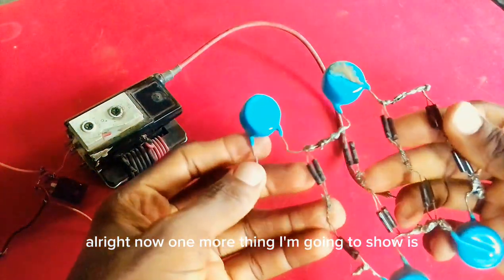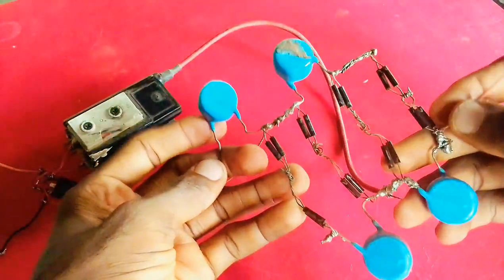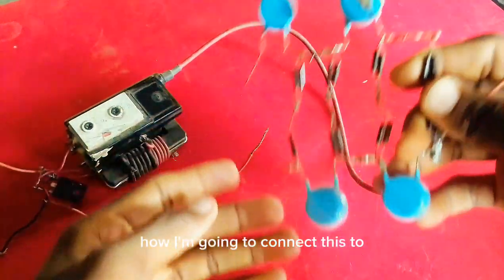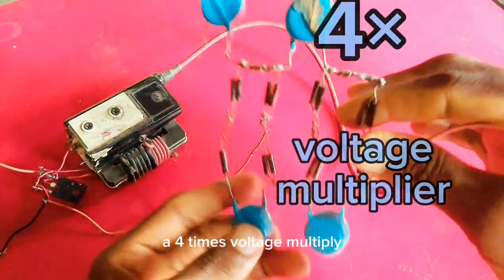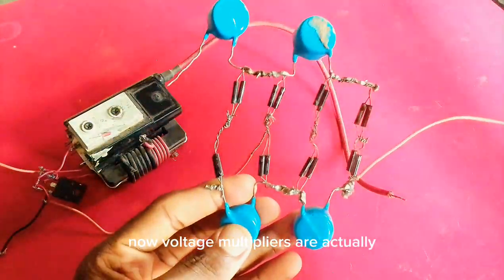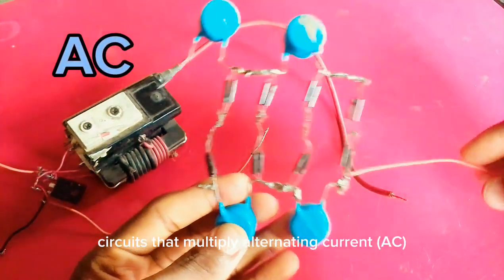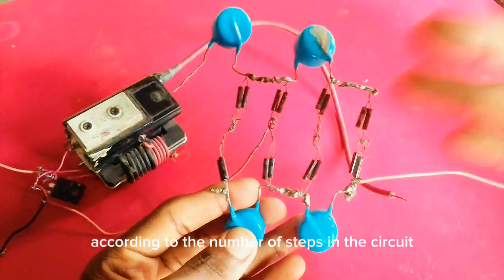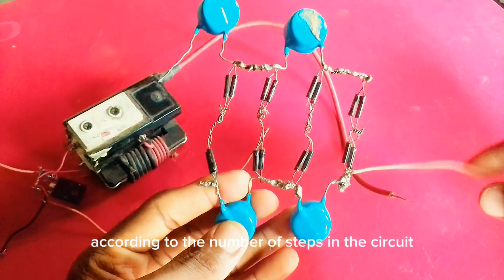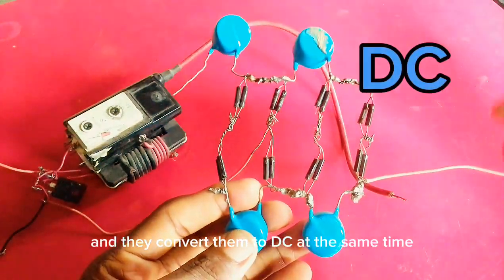Now one more thing I'm going to show us is how I'm going to connect this to a 4x voltage multiplier. Voltage multipliers are actually a circuit that multiply alternating current according to the number of steps in the circuit and they convert them to DC at the same time.